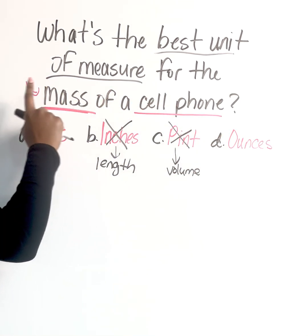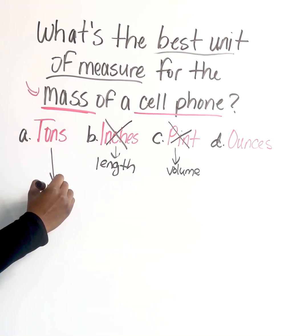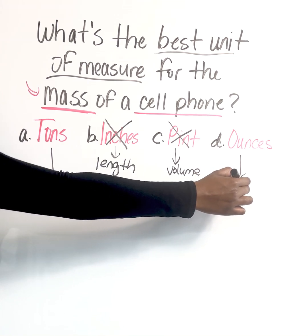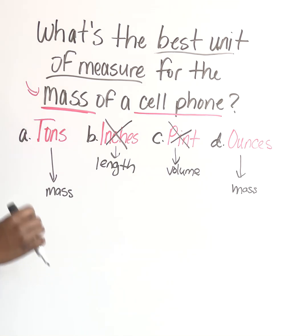Of course, ounces is going to go with mass. So we're going to leave tons because that goes with mass, and we're going to leave ounces because that goes with mass. Based on what's left, let's go into our third step. Choose what's most appropriate.